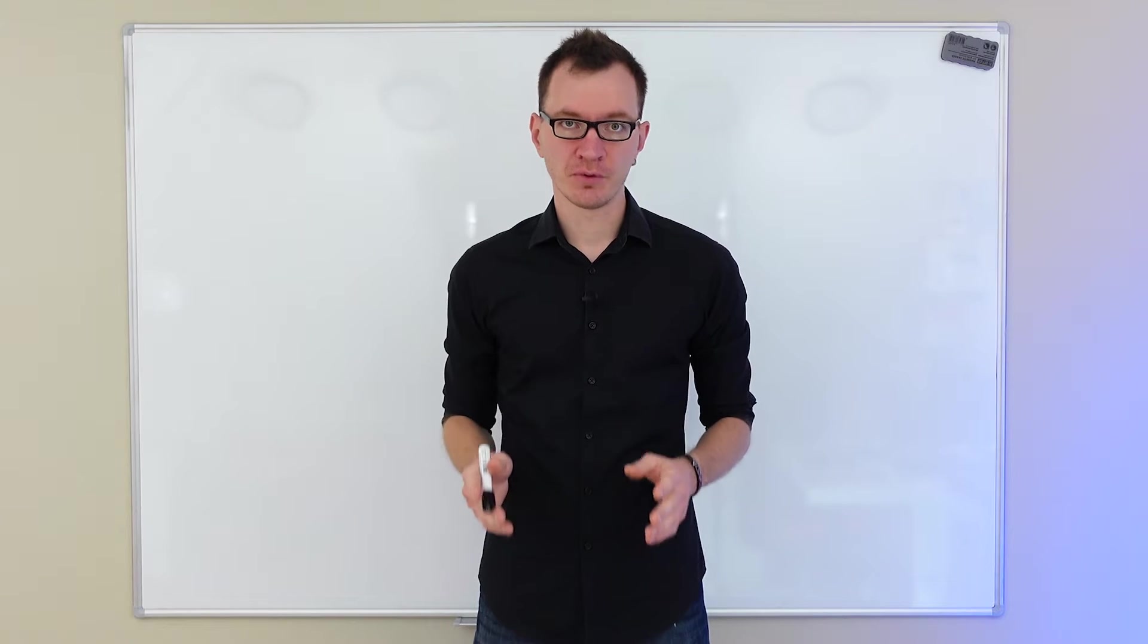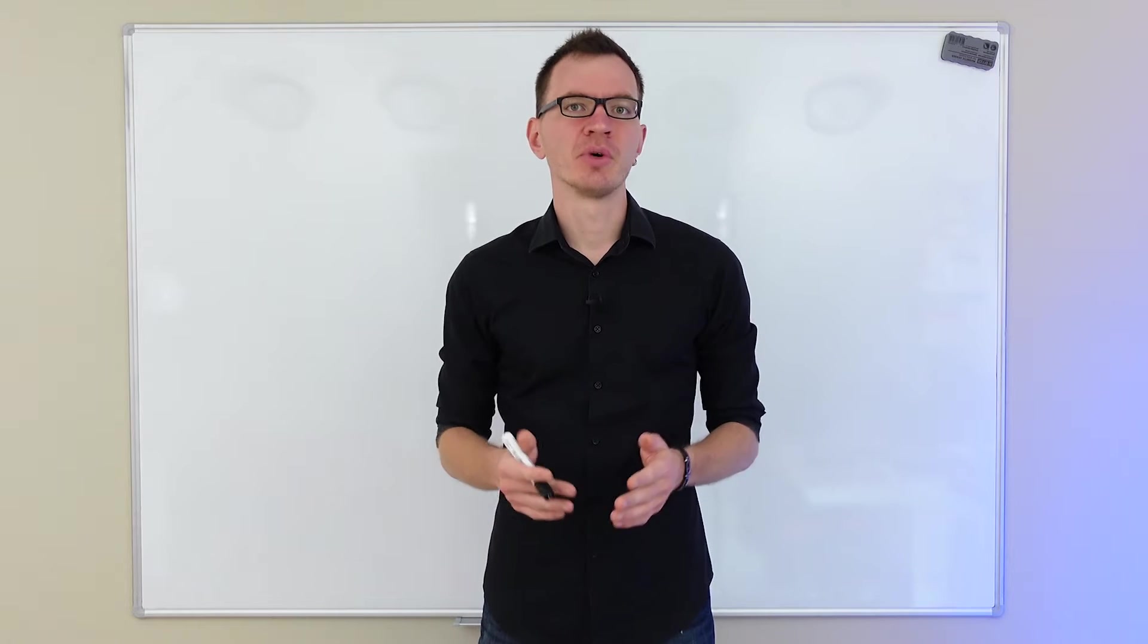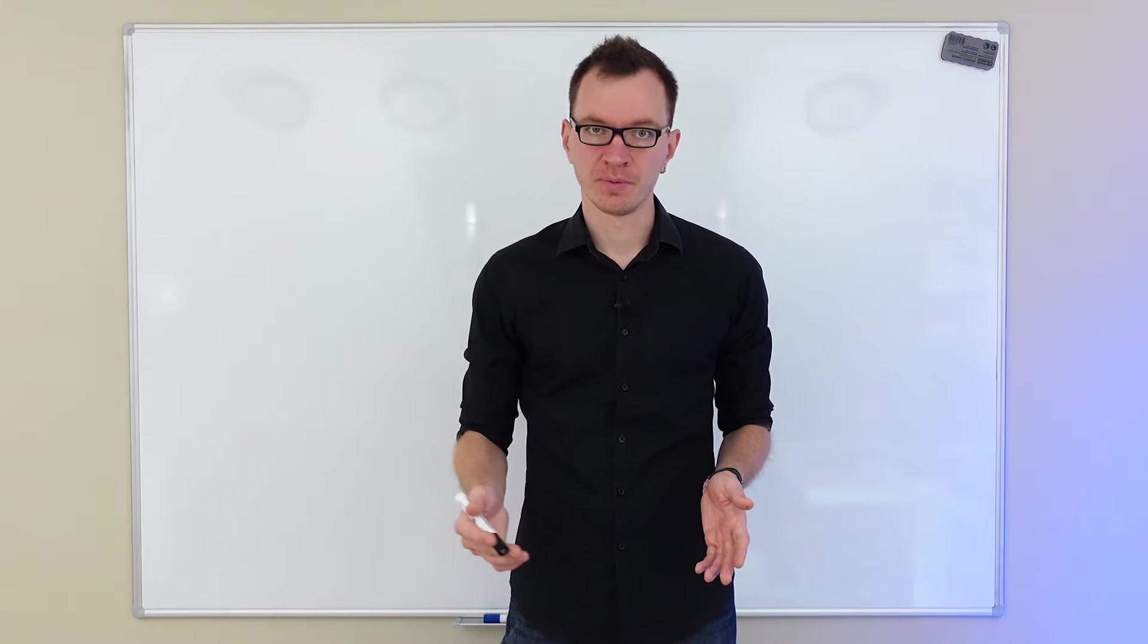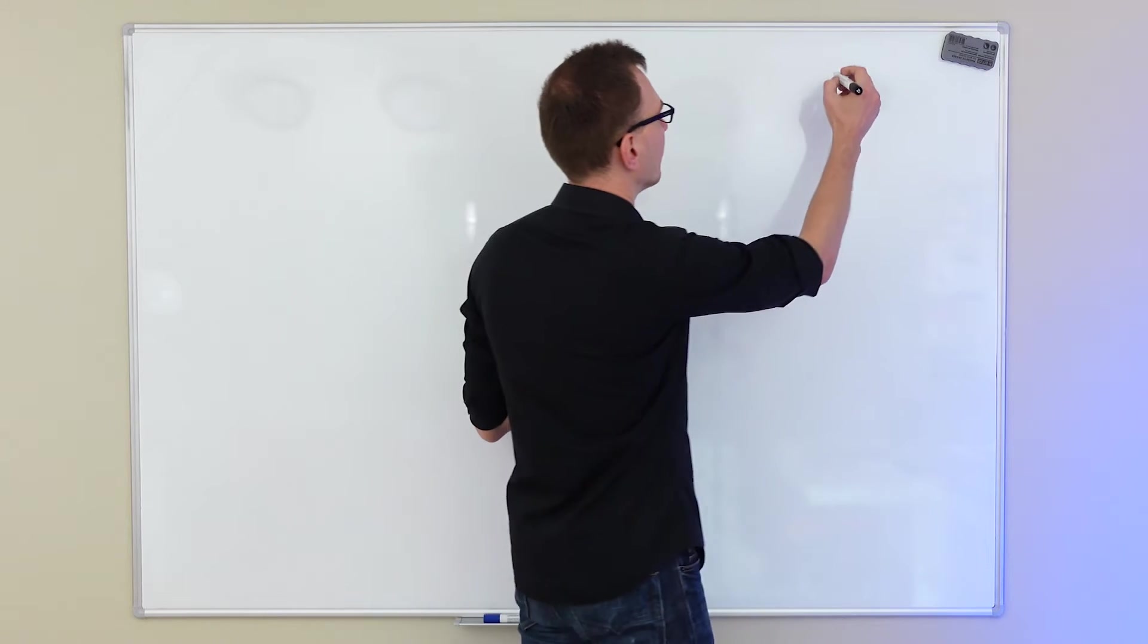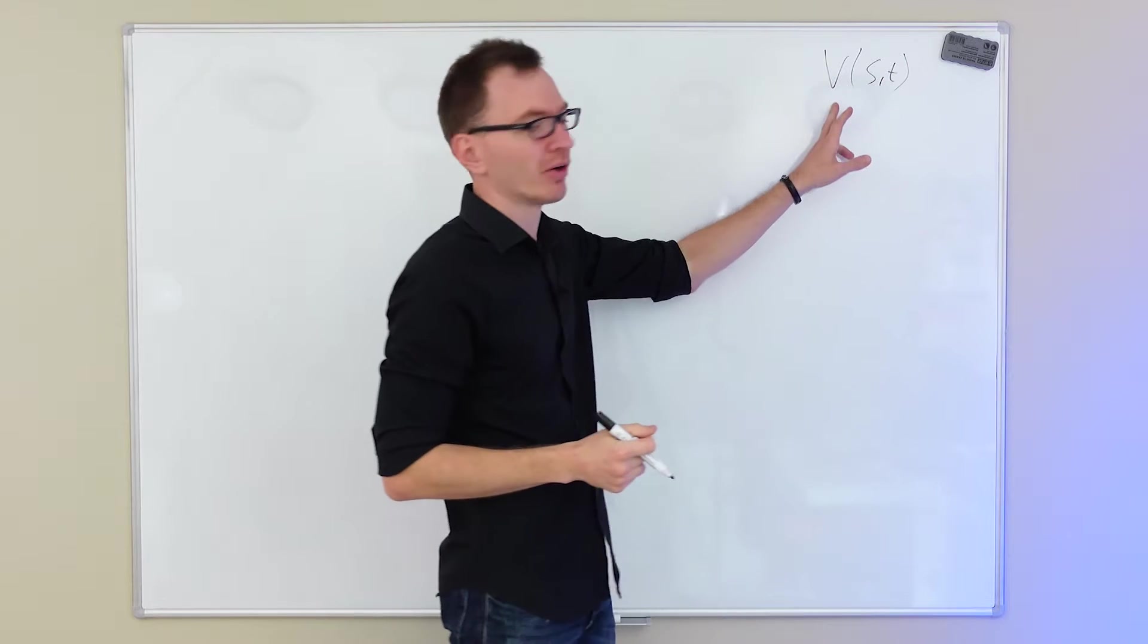In order to derive the Black-Scholes formula, we begin with an options contract. Let's assume that we're working within the equity markets and this options contract is on a stock. I'm going to denote this option by a letter V, so V(S,T) is going to represent our option.